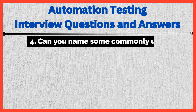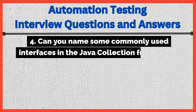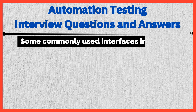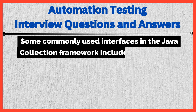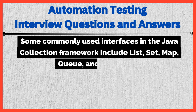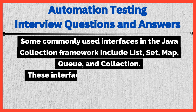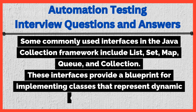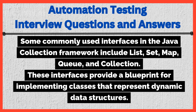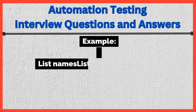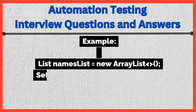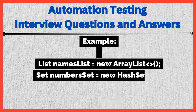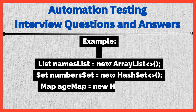Can you name some commonly used interfaces in the Java Collection Framework? Some commonly used interfaces include List, Set, Map, Queue, and Collection. These interfaces provide a blueprint for implementing classes that represent dynamic data structures. Example: List<String> names = new ArrayList<>(); Set<Integer> numbers = new HashSet<>(); Map<String, Integer> pageMap = new HashMap<>();